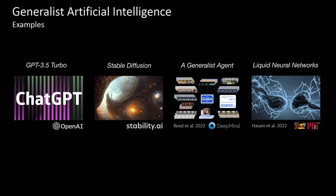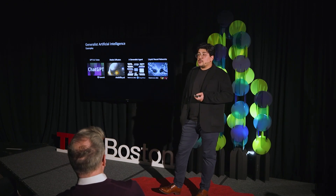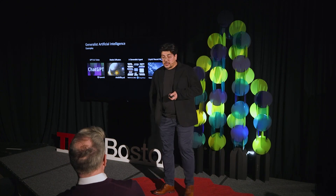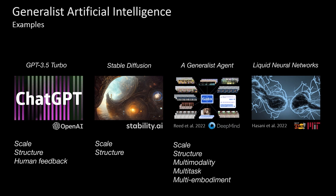Different flavors of generalist AI are out there. One of them is ChatGPT, there is Stable Diffusion in the vision world, there is Gato — a generalist AI by DeepMind which is a multimodal presentation of generalist AI — and we have liquid neural networks, which is our invention at C-Cell. The components of a generalist AI are scale and structure, and in the case of ChatGPT, a lot of human feedback. Gato is a multimodal, multi-task, and multi-embodiment technology, and liquid neural networks are systems that are inverse scaling but can learn an adaptive representation of the world so they can stay adaptable.